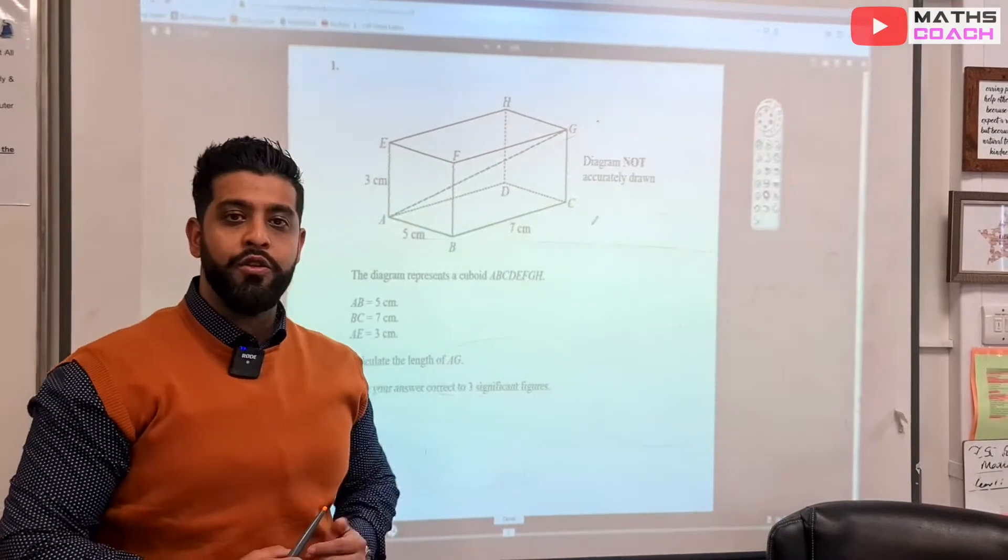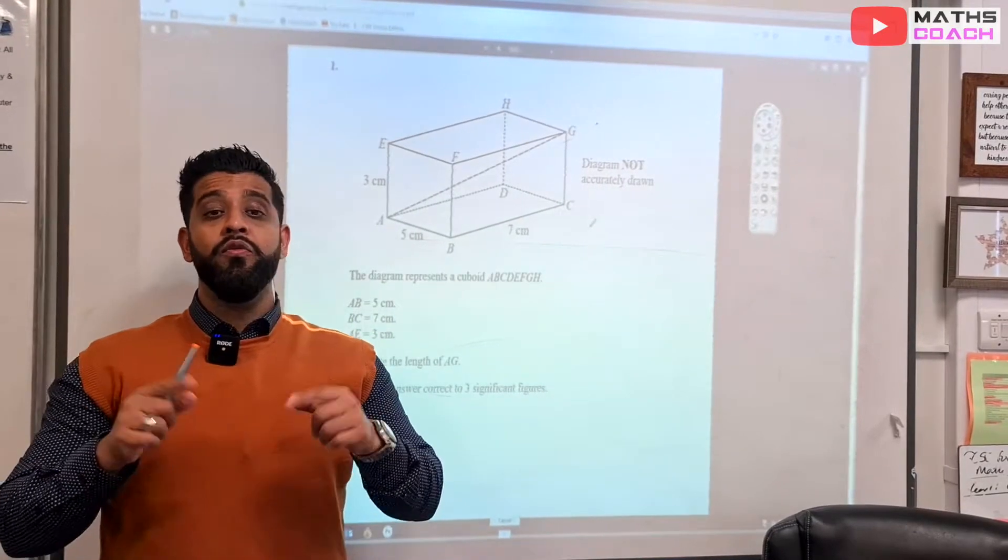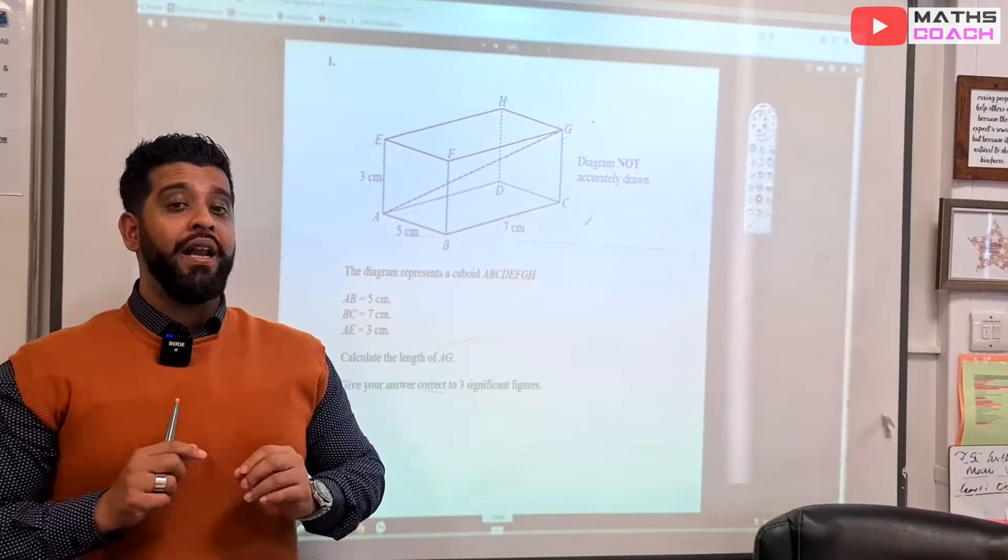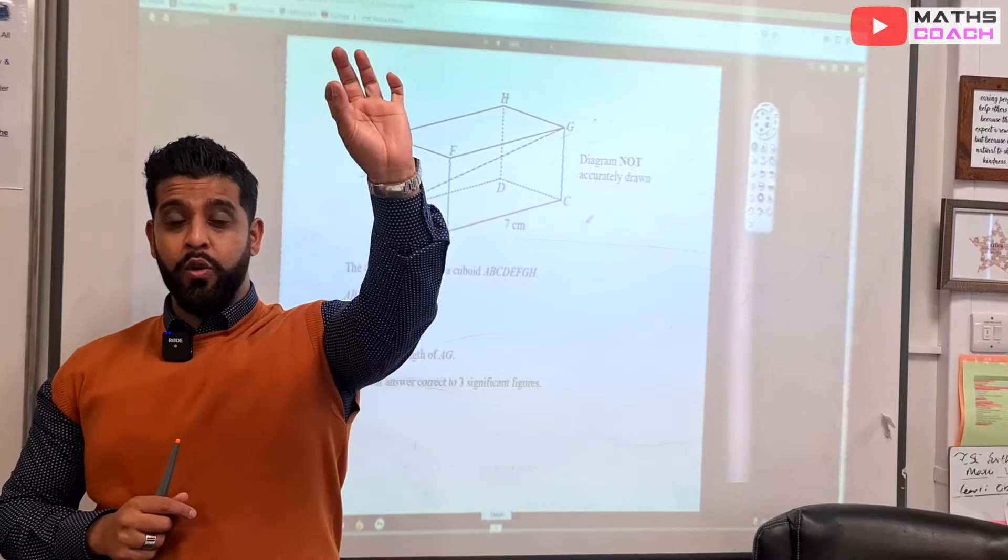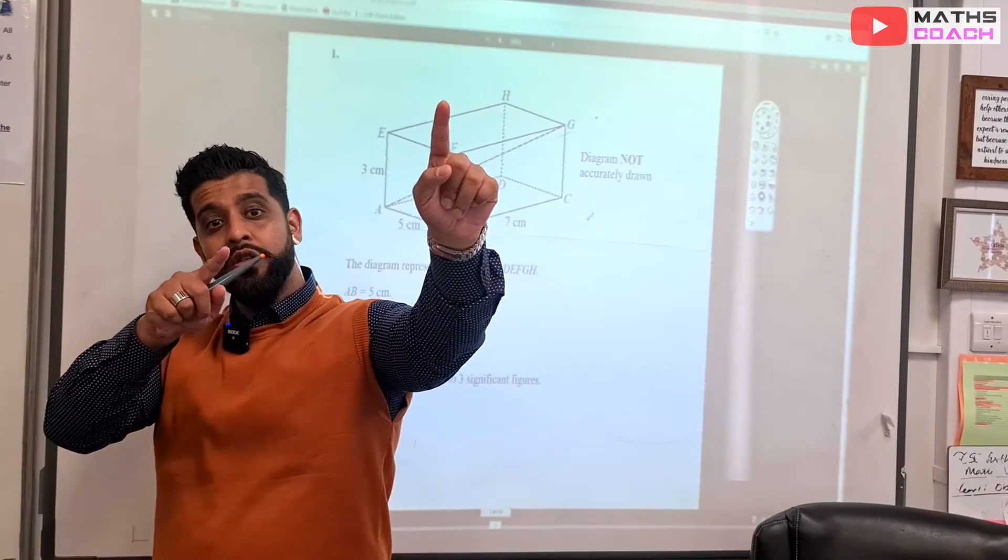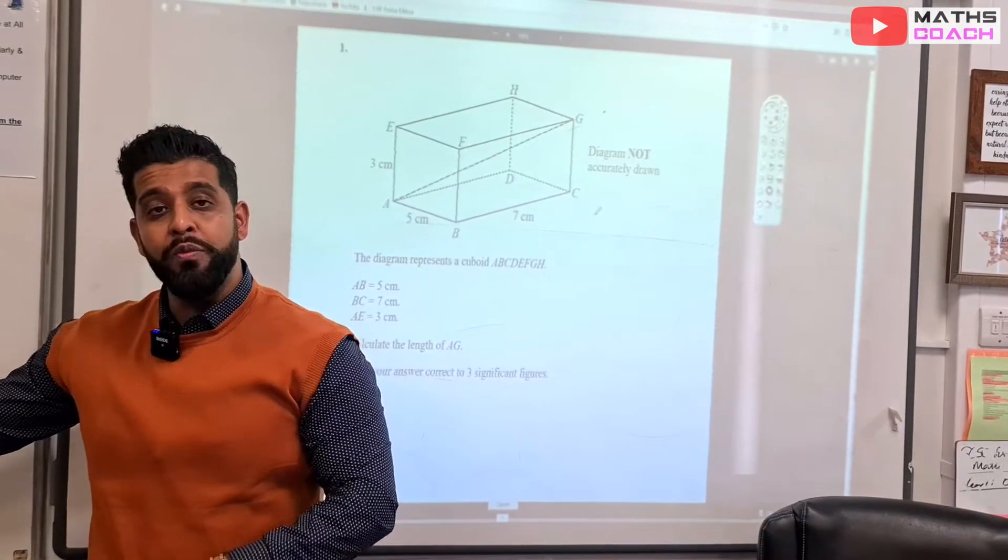Calculate the length of A to G. Now I want you to picture, I want you to imagine the room that you are sitting in right now. It's most likely a cuboid, a 3D shape. And I want you to picture one end of the ceiling, one corner of the ceiling. And then I want you to go diagonally across the room and go down to the other end of the room and on the bottom.